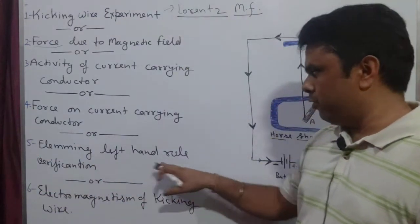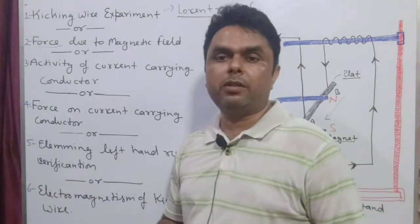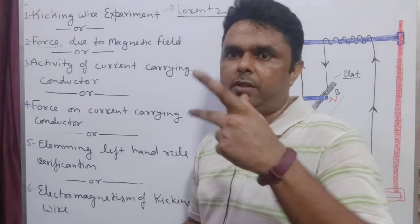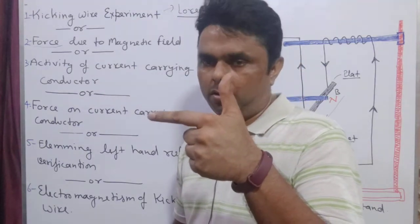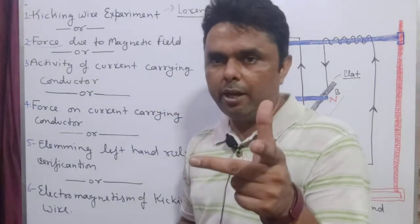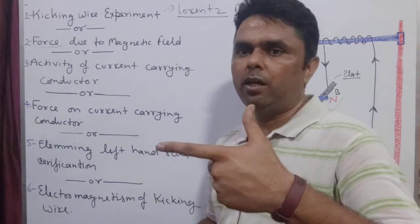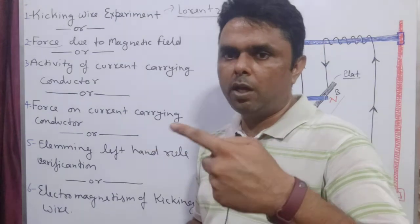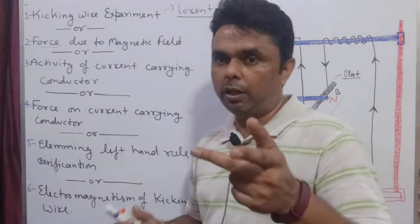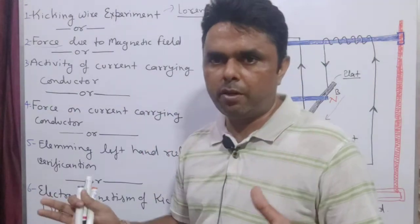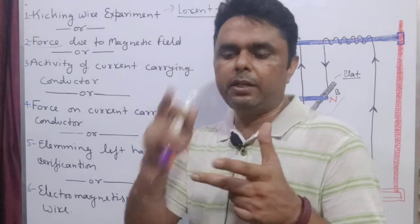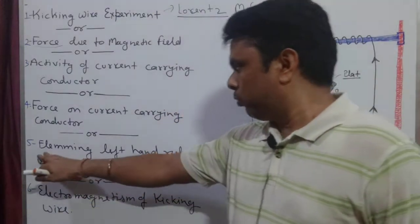The fifth kick is: Fleming's Left Hand Rule verification. What did Fleming teach us with his left hand? FMC — F means Father, M means Mother, and the middle finger means Child. So: Father means Force, Mother means Magnetic field, and Middle finger means Current — that is Child. So you can very easily remember: mother, father, child — Fleming's Left Hand Rule — and the relation between force, magnetic field, and current.